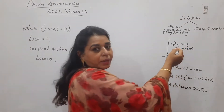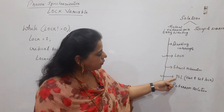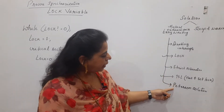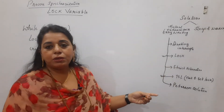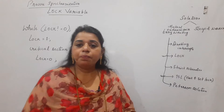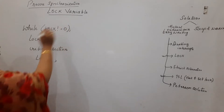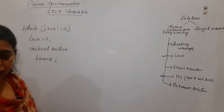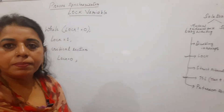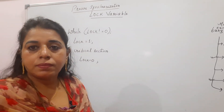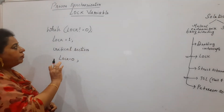The first one in the list is disabling interrupts, the second is using the lock variable, the third is strict alternation, then test set and lock, and finally Peterson. I have ticked two solutions I wanted to explain first. The very first one is using the lock variable — here is the pseudo code for it.